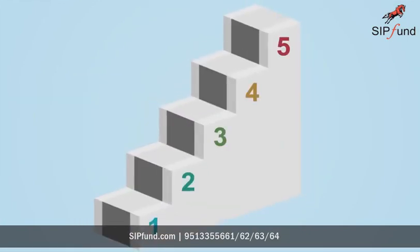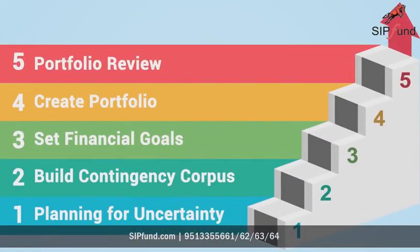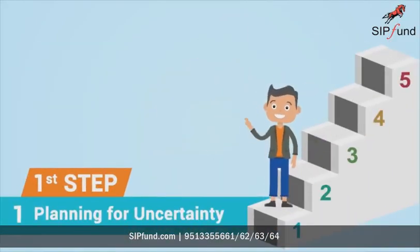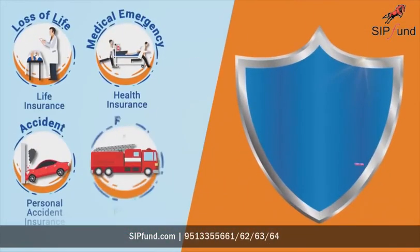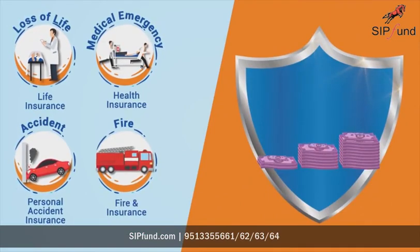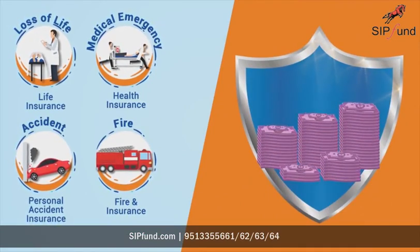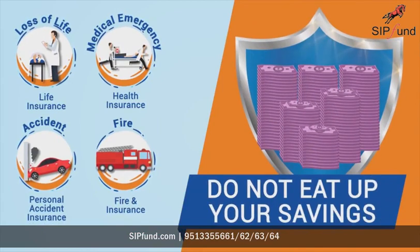Here are the 5 steps of building a successful financial plan. Step 1 — Planning for Uncertainty: protect yourself from uncertainty by buying required insurance policies to ensure that any uncertainty does not eat up your savings.